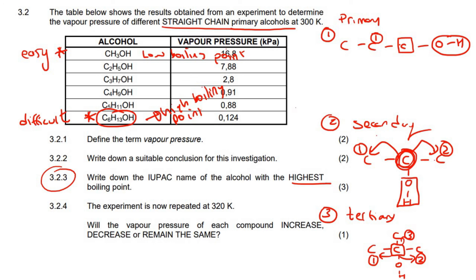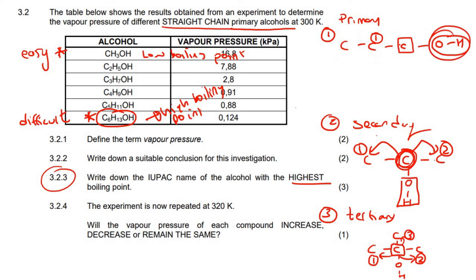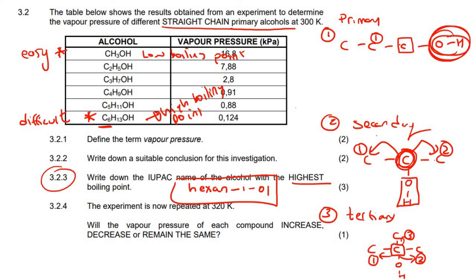So we have a primary alcohol, which means the OH is going to be on carbon number one. It's a six carbon chain, so that's going to be hexane. Alcohols always end with 'ol', and we must say that the OH is on carbon number one and there are no branches. So the IUPAC name would be hexan-1-ol.